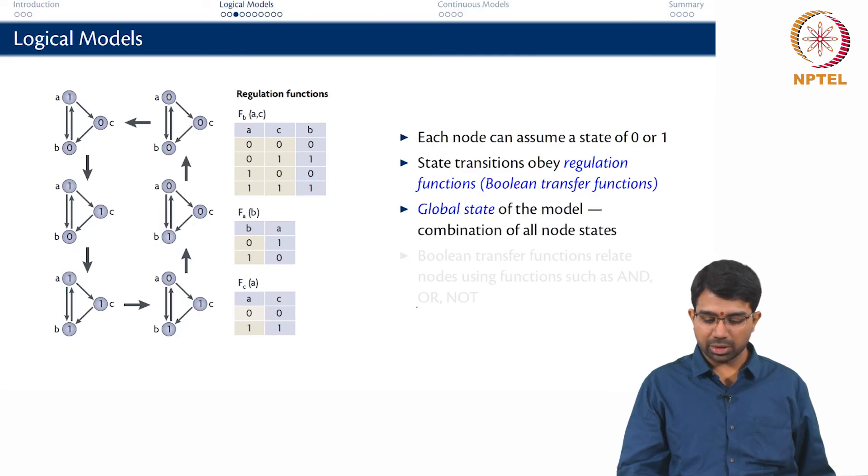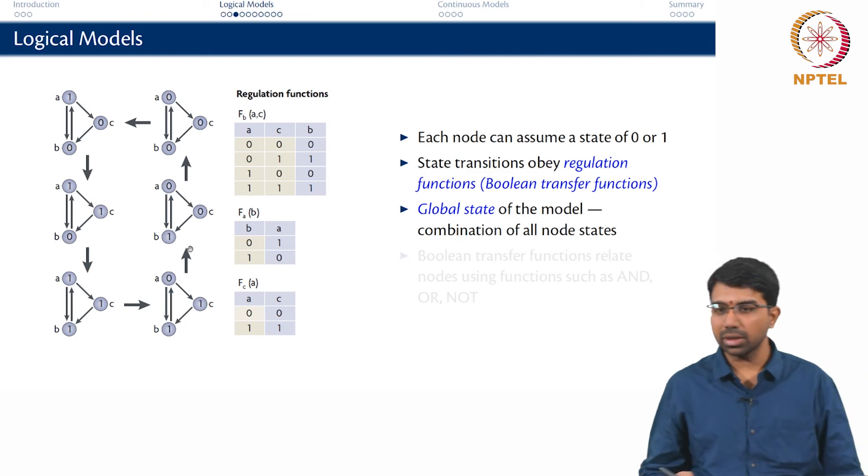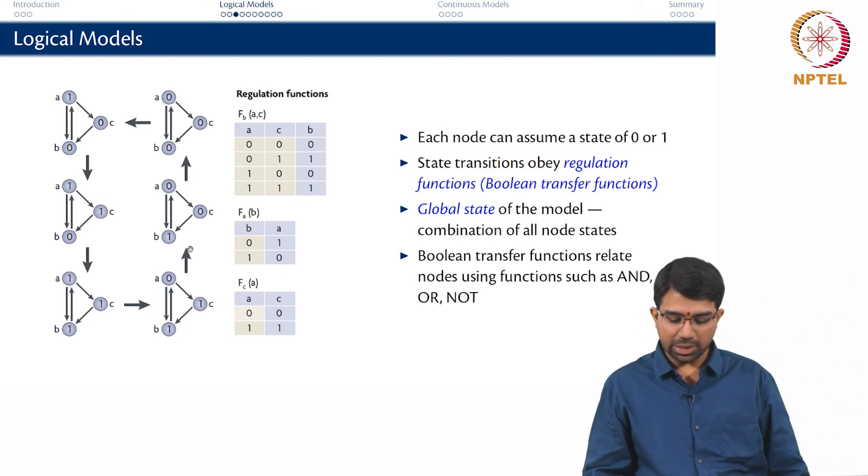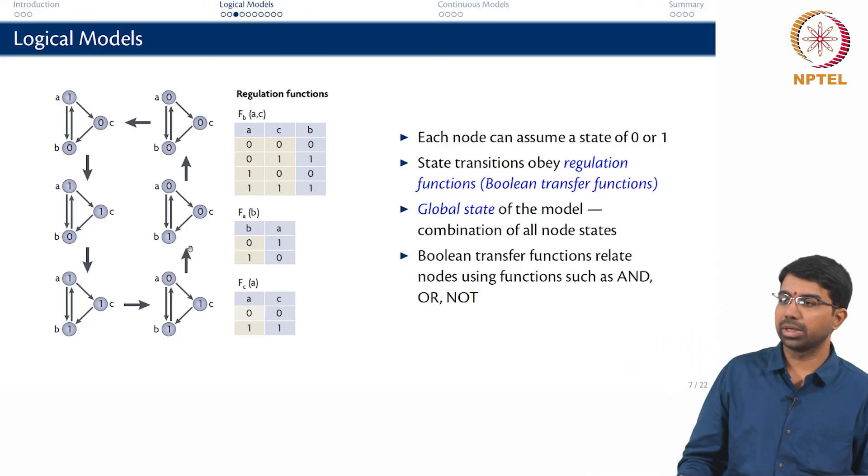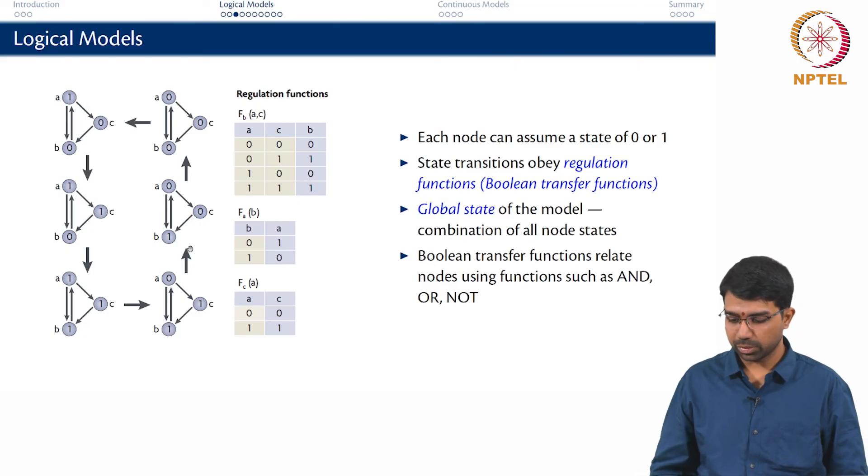So the global state of the model is the combination of all node states. So 100 is a state. We see the same thing here. 100 goes to 101 and so on, exactly what we just calculated. The Boolean transfer functions can relate the nodes using various Boolean operators like AND, OR, NOT, you can have AND NOT, whatever you want.